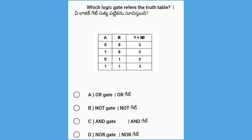Next, which logic gate refers to the given truth table? The options are OR gate, NOT gate, AND gate, and NOR gate. The answer is AND gate. You can see the truth table to verify.